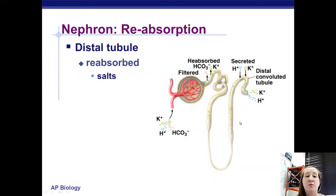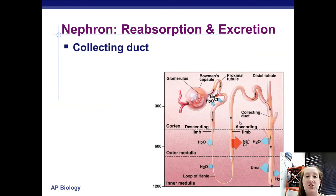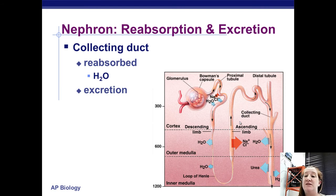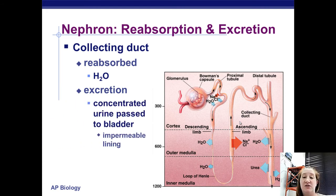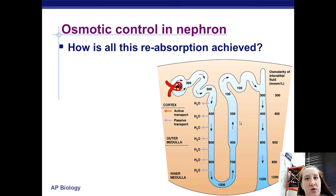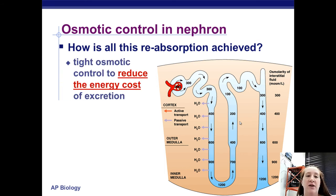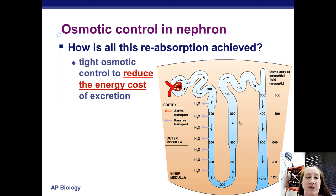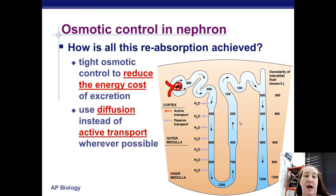The structure of the loop of Henle allows for its function: one side allows water absorption, the other side allows salt absorption. Then in the distal tubule, you get some reabsorption of salts, water, and bicarbonate. The collecting duct allows the body to reabsorb water as much as needed and get rid of anything else. The coolest thing about the kidney is that it uses countercurrent flow — tight osmotic control allows most things to move by diffusion and osmosis, with very little energy expended for active transport.